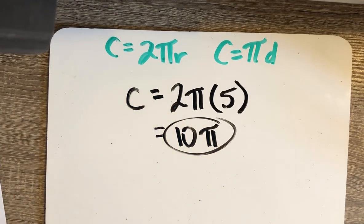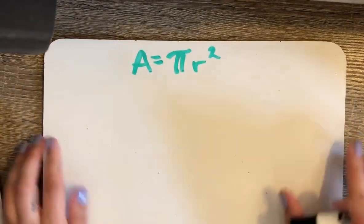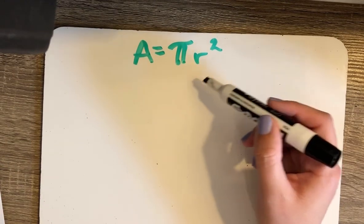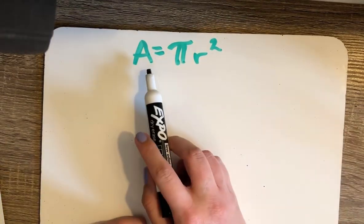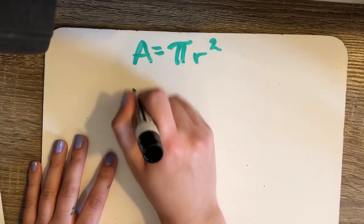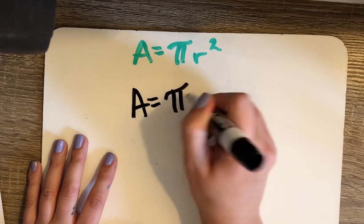For the area, the area formula that we need to know, which is provided for you on the Regents as is the circumference formula, is A = πr². So for this particular area we just have to substitute in 5 for our radius.